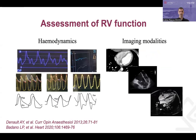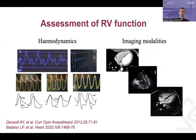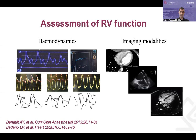In the perioperative period, there are several methods for evaluating the right ventricle. Imaging modalities include CT, ECHO, and cardiac MRI, but for the intraoperative period, ECHO is the most feasible. We shouldn't use ECHO in isolation — we also have hemodynamic monitoring, and we should integrate ECHO findings with our hemodynamics to give a fuller picture of what's going on with the patient.